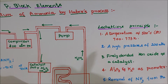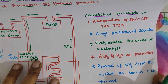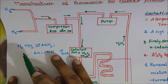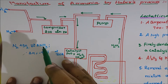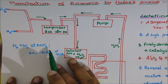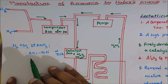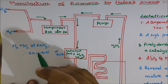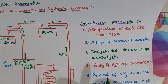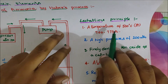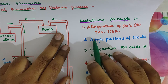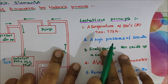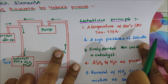In Le Chatelier's principle, the important conditions are maintained. The reaction is: one mole of nitrogen reacting with three moles of hydrogen to form two moles of ammonia. This is the equilibrium reaction. The heat liberated is 92 kilojoules — it is an exothermic reaction. A moderate temperature of 500 degrees centigrade, or 700 to 773 Kelvin, is used, and high pressures of 200 atmospheres are required.